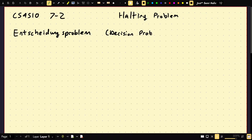Both Alan Turing and Alonzo Church solved this problem, independently. Alan Turing developed Turing machines to solve this problem, and Alonzo Church developed Lambda Calculus.